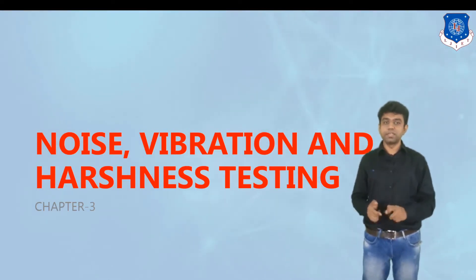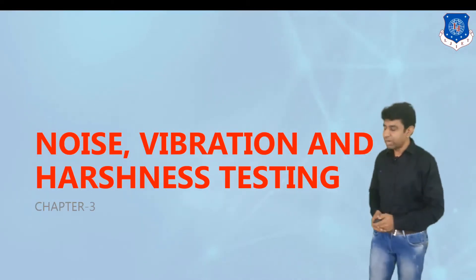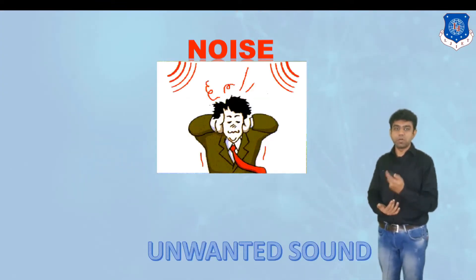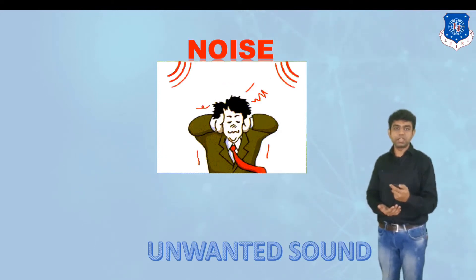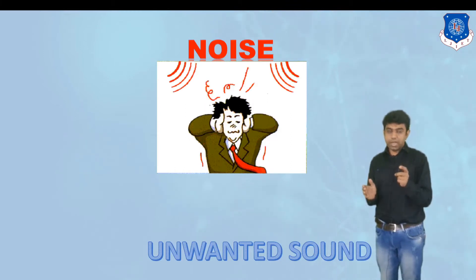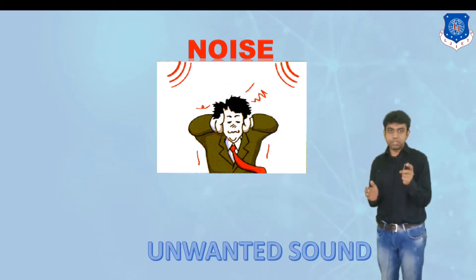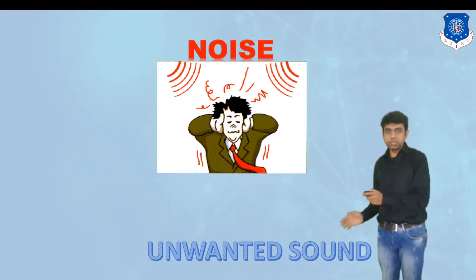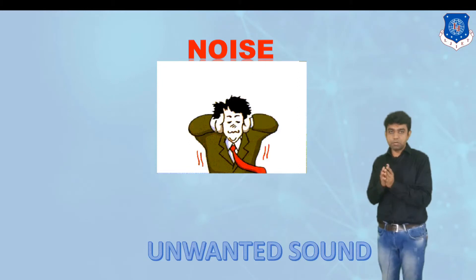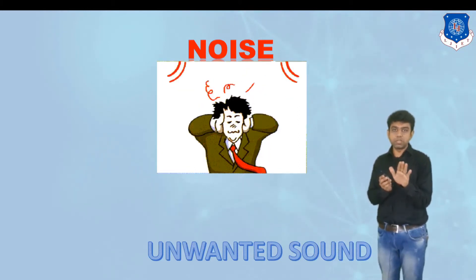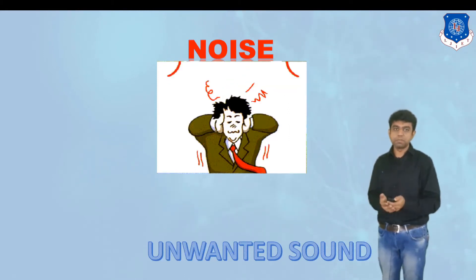Later on we will understand the different sources of noise and vibration and the different ways to control them. The first term is noise — noise has been defined as an unwanted sound. The clear distinction between noise and vibration is that 'unwanted' quality. Technically, sound is measured in decibels, and if the decibel quantity is more than 70 dB, it is naturally treated as noise, or unwanted sound.